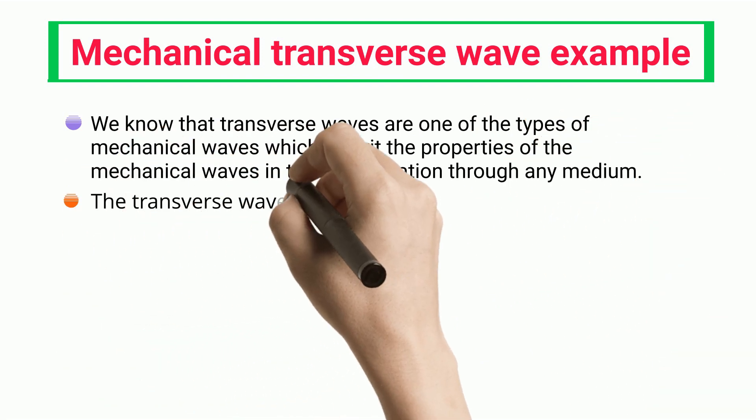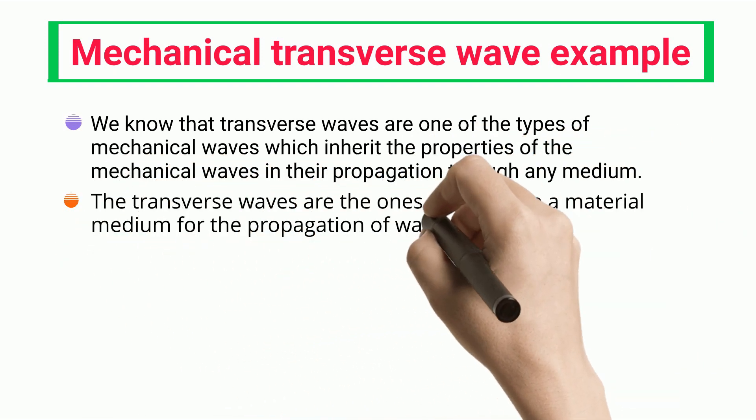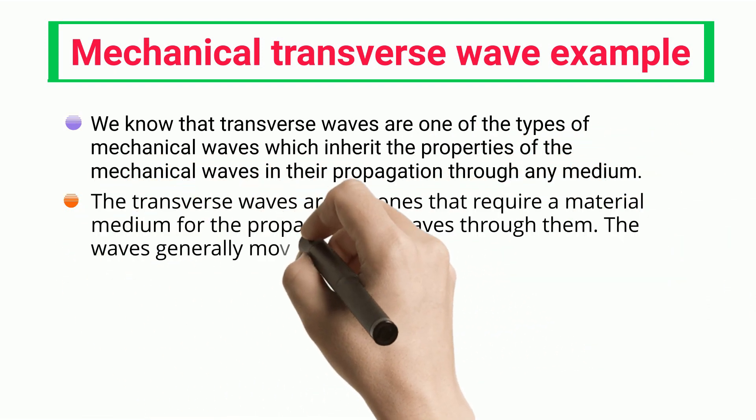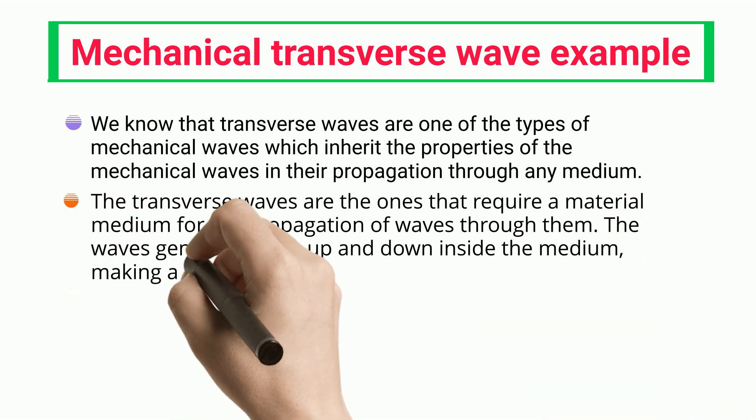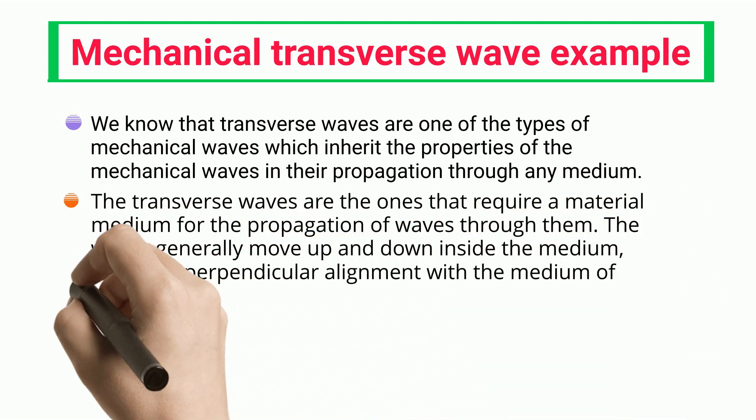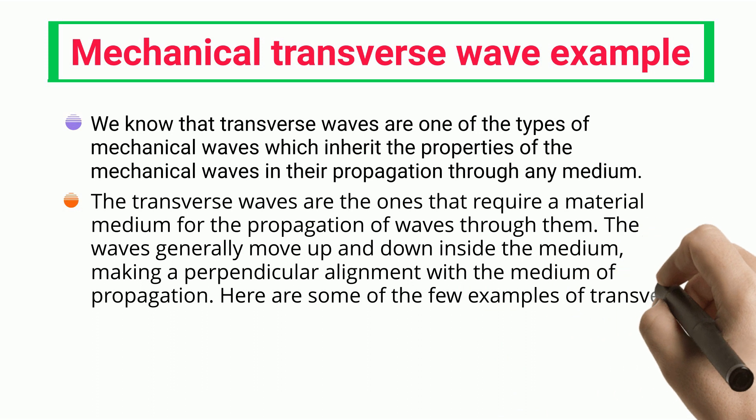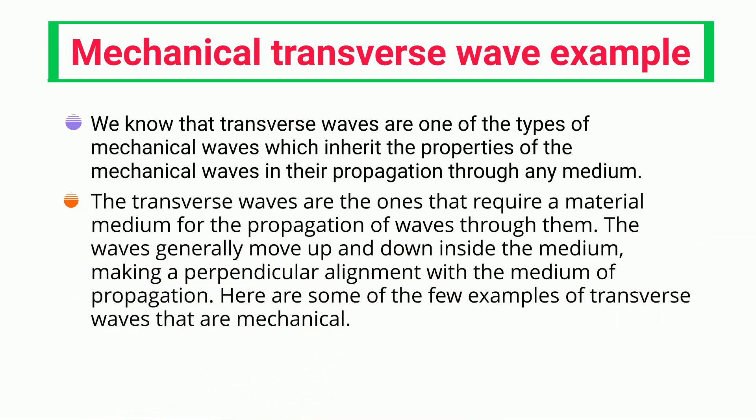The transverse waves are the ones that require a material medium for the propagation of waves through them. The waves generally move up and down inside the medium, making a perpendicular alignment with the medium of propagation. Here are some of the few examples of transverse waves that are mechanical: water ripples, musical string vibration, and light waves.